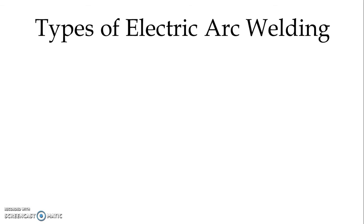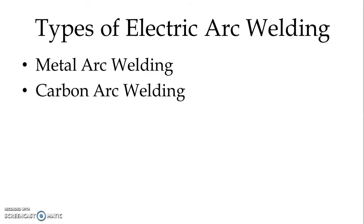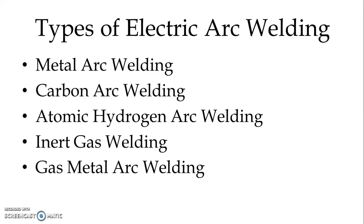Let us discuss different types of electric arc welding: metal arc welding, carbon arc welding, atomic hydrogen arc welding, inert gas welding, and gas metal arc welding. We will discuss each type briefly — its application and certain advantages and disadvantages — one by one.